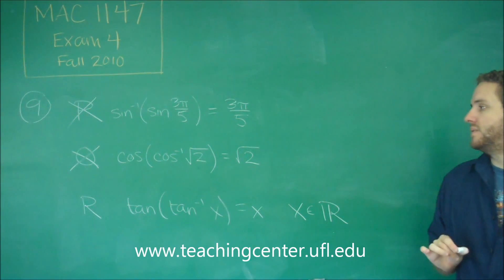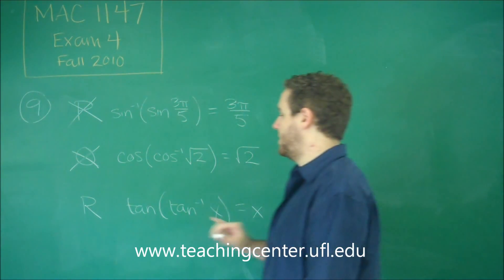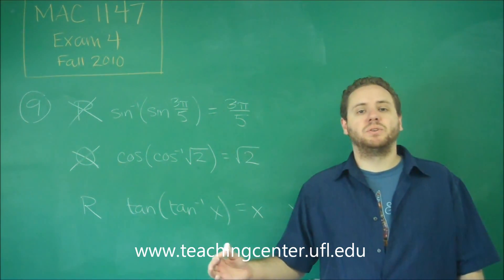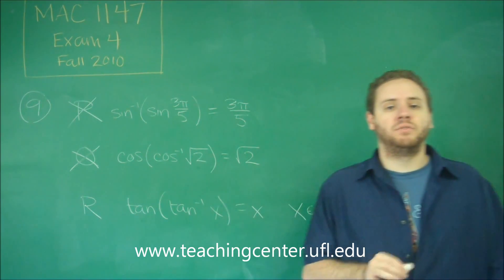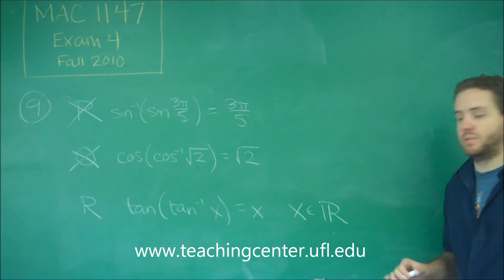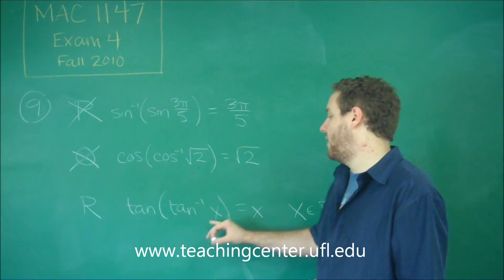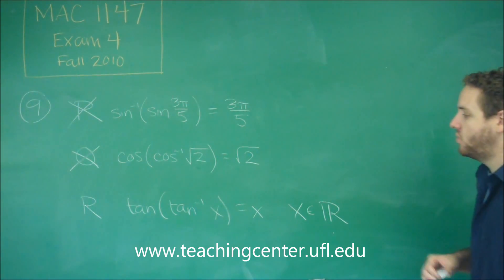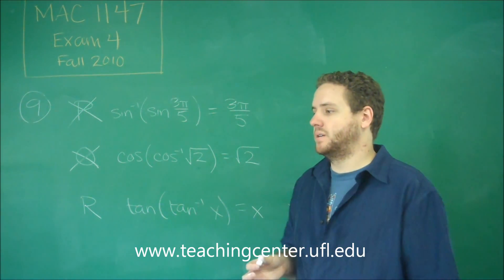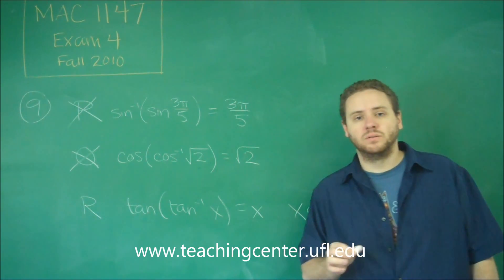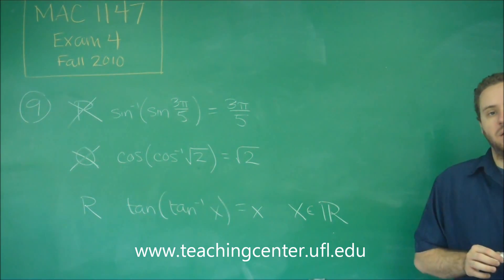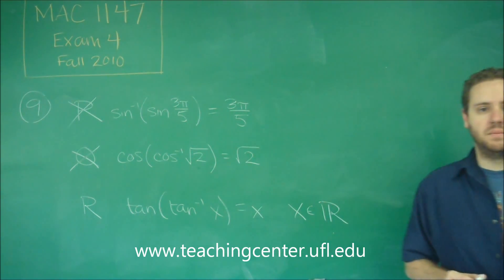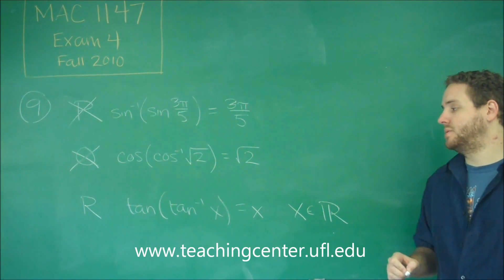Tangent obeys a slightly different rule than sine and cosine. Because the range of your regular tangent function can be any real number. So that means the domain of your arc tangent function is any real number. So this part is certainly fine. You can do the arc tangent of any number. And when you do that, you're going to get some answer. You're going to get some angle between negative π over 2 and π over 2. And when you do the tangent of that, you are going to get that same number back. So this is absolutely true.